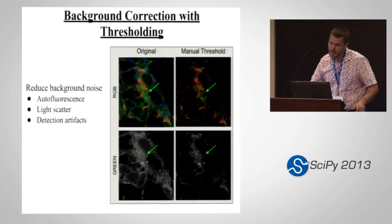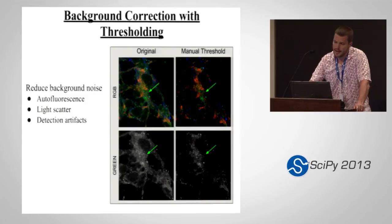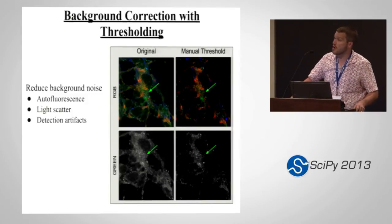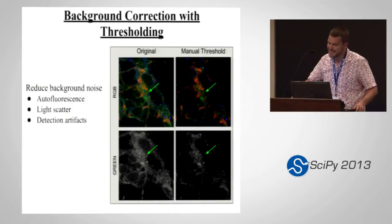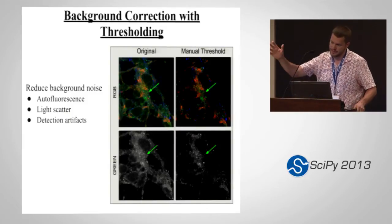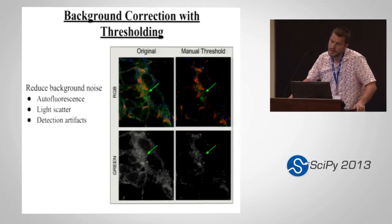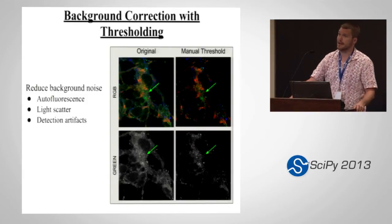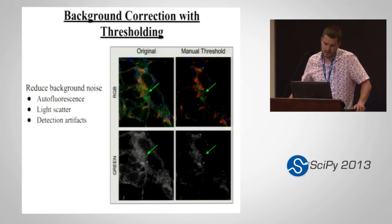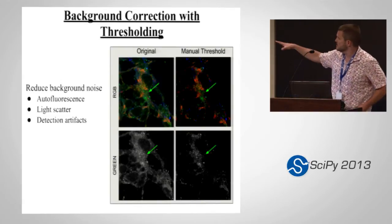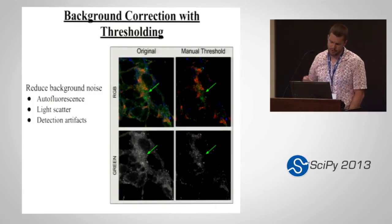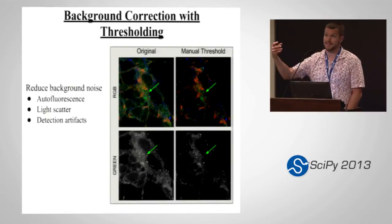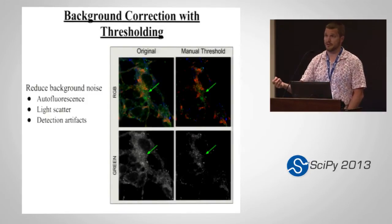Thresholding is done on a channel-by-channel basis. On the left you see the original raw images, and to the right you see images after they've been thresholded by our expert — the other part of our dynamic duo. Some typical sources of background noise in confocal microscopy come from autofluorescence, scatter, and experimental detection artifacts. The lower set of images is the green channel, and that's particularly important because autofluorescence — light coming back from the cellular sample itself — is maximized in the green channel.